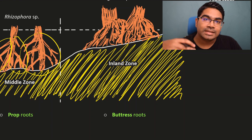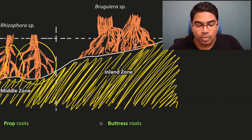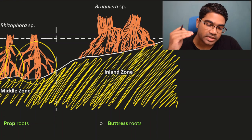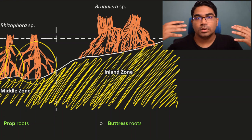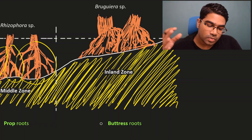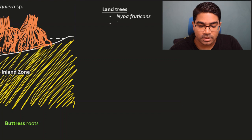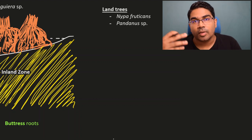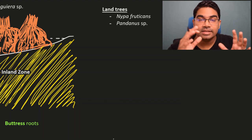The land is now suitable for land trees. At the inland zone where Bruguiera is, even at high tide very little water reaches that place — it is pretty much dry land. Over a long time, species that grow well on dry land will be the successors taking over from Bruguiera. These are land trees such as Nypa fruticans, a type of palm tree, and Pandanus species — screw pine. These are the new dominant species.